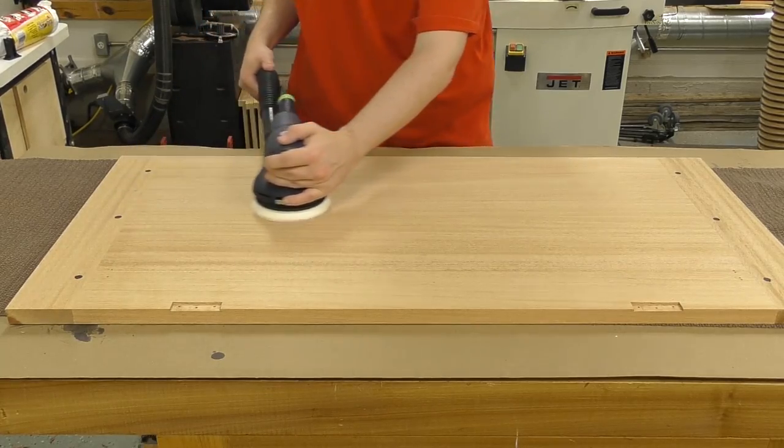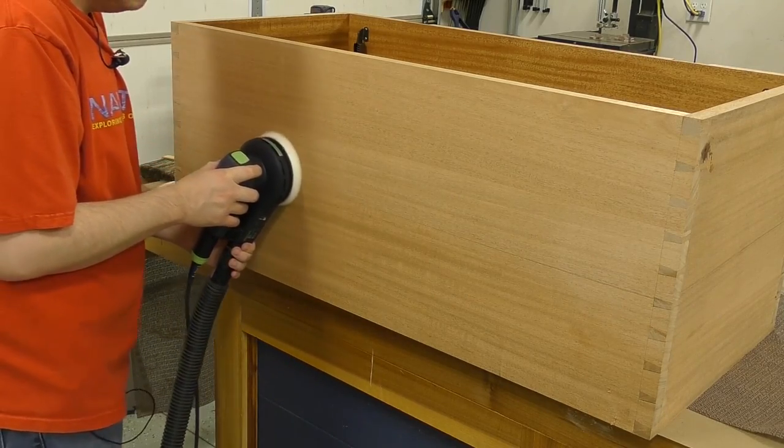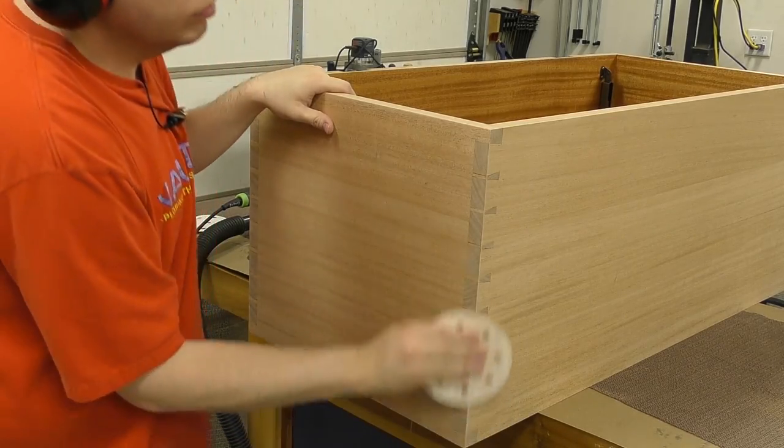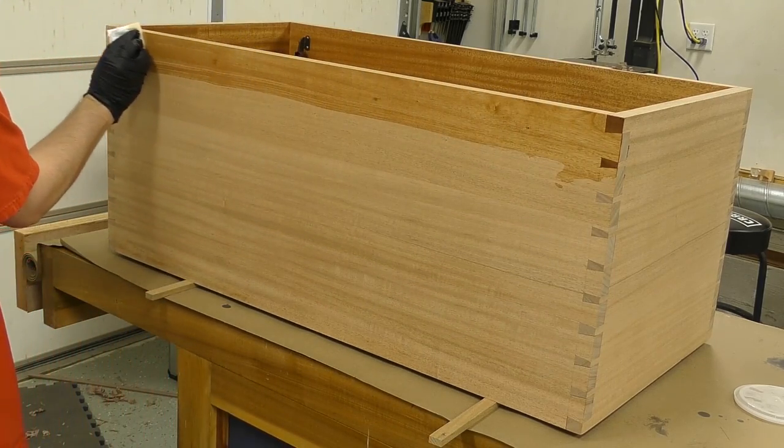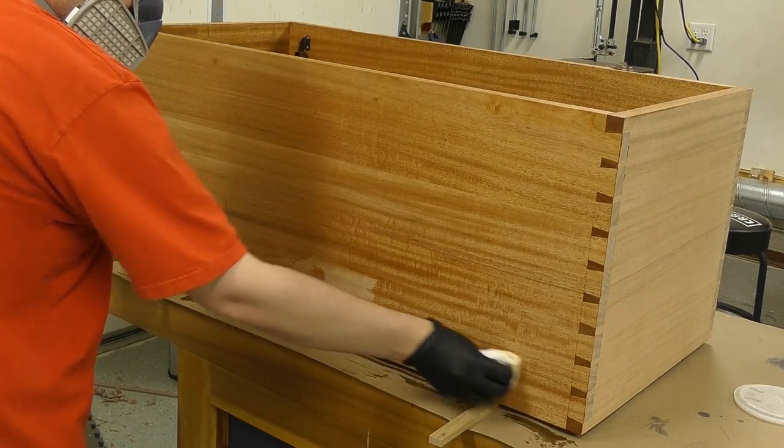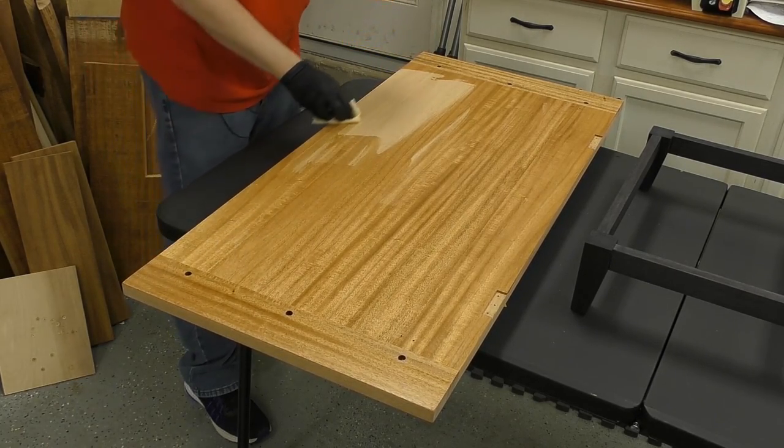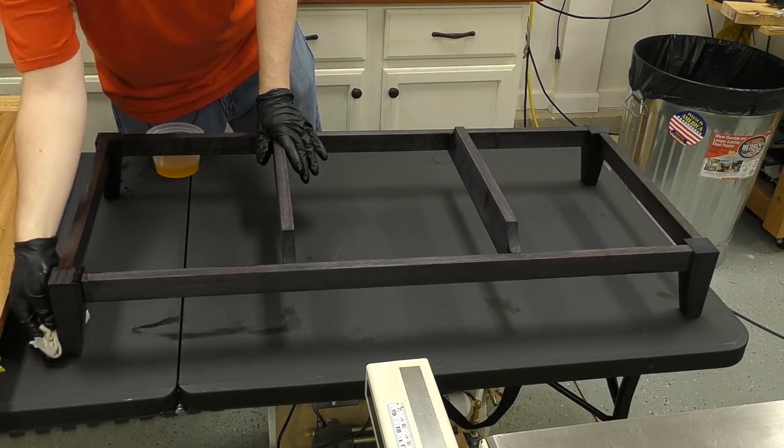Now for the blanket chest and the lid, I sanded it up to 220 grit using my orbital sander because I wanted a nice smooth finish. And then using that 220 grit sandpaper, I eased all of the edges. The finish on this blanket chest is four coats of a semi-gloss armor seal from General Finishes. Now I was getting a lot of dust in my shop, so on the fourth and final coat, I did thin that 50-50 with mineral spirits. It made it dry a whole lot faster and less dust actually stuck to the surface.